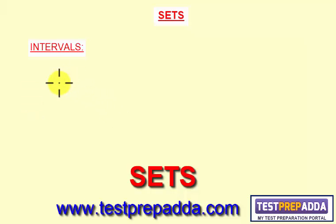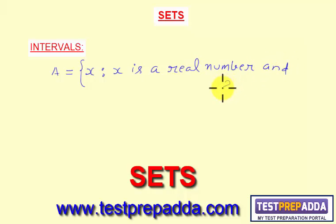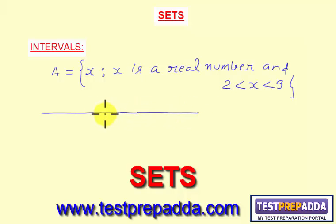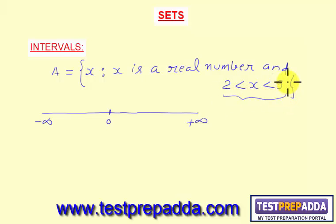To understand this, consider a set A — written in set builder form — A is equal to all values of X such that X is a real number and X lies between 2 and 9. Both 2 and 9 are excluded. We know all quantities on this continuous line belong to real numbers, and we are given X between 2 and 9, so a subset is given. If we want to write this in terms of intervals, we write it in this manner.